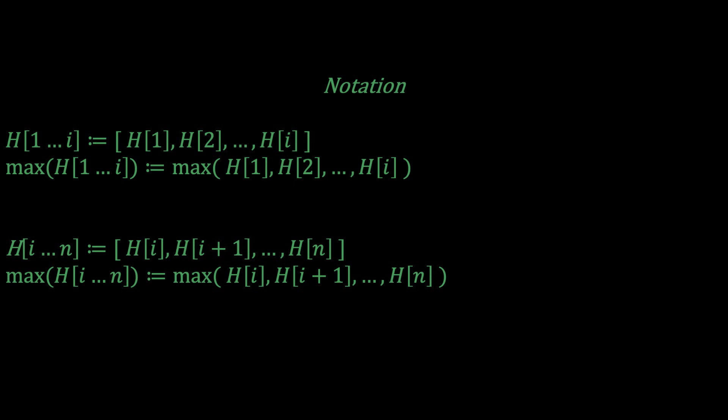Similarly, I'm going to denote H[i:n] as the sub-array of H that includes elements H[i], H[i+1] all the way to H[n]. And again, the maximum of H[i:n] denotes the maximum of H[i], H[i+1] all the way to H[n]. Okay, so that wasn't too hard.